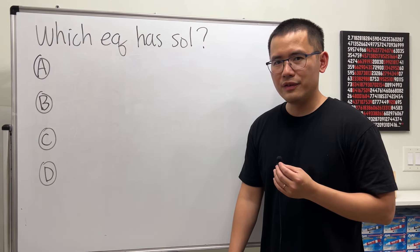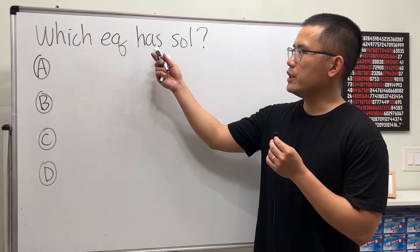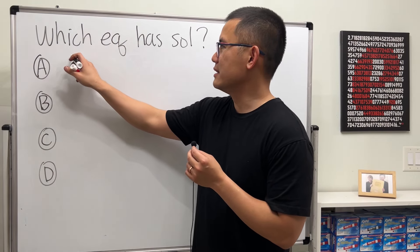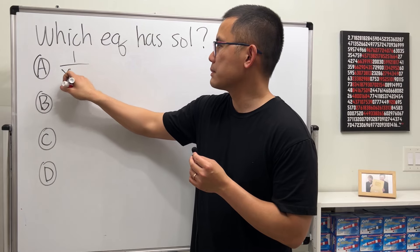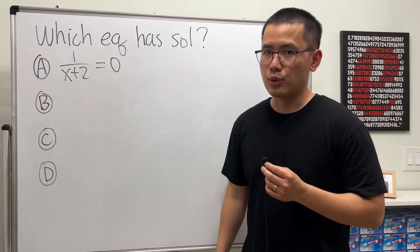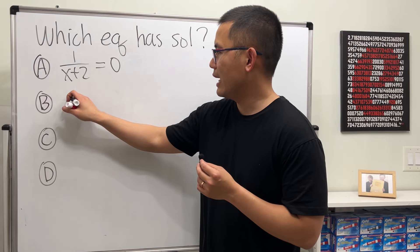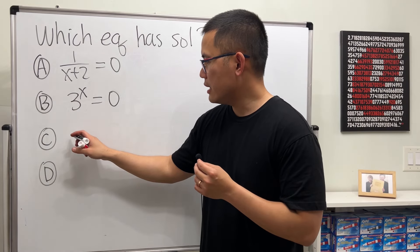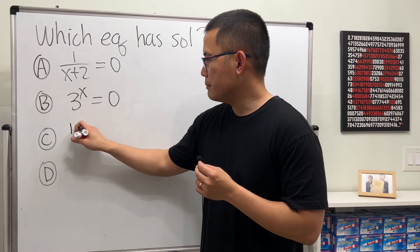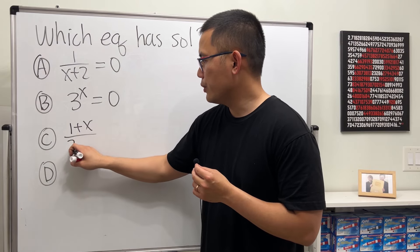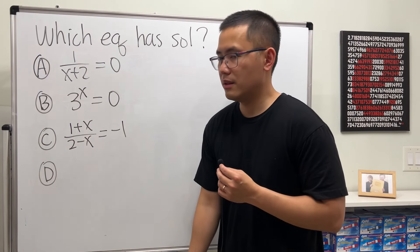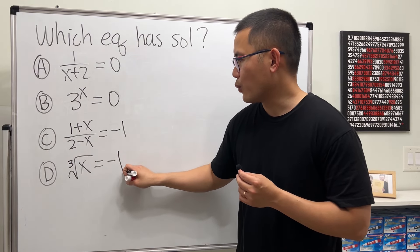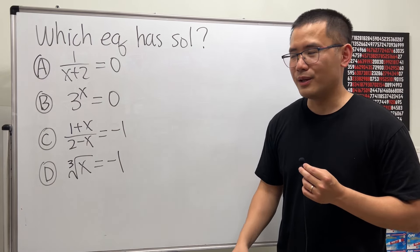Before we go, I want to give you another question — but this time, let's look for the equation that actually has solutions. First: 1 over x plus 2 equals 0. Second: 3 to the x power equals 0. Third: (1 plus x) over (2 minus x) equals negative 1. And finally: the cube root of x equals negative 1. Let me know your answer in the comments below!